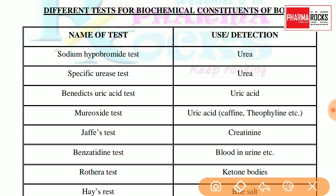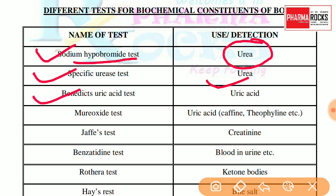The sodium hypobromide test is performed for the detection of urea. Urea के detection के लिए test की जाती है, वो है sodium hypobromide test. Next test है specific urease test — specific urease test is also for urea. Then, Benedict's uric acid test is also for a urea-containing compound.